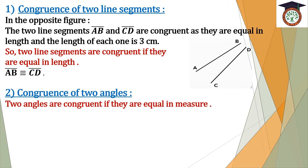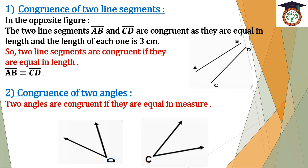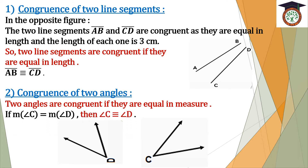Number two: congruence of two angles. Two angles are congruent if they are equal in measure. Here we have angle D and angle C. If measure of angle C equals measure of angle D, then angle C is congruent to angle D.